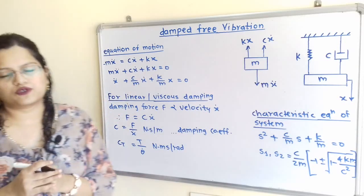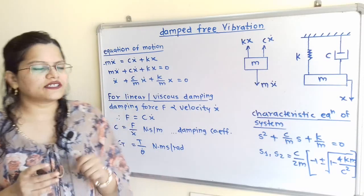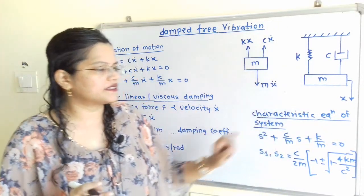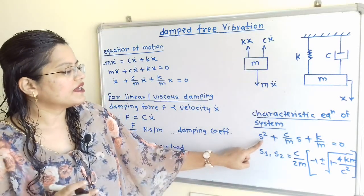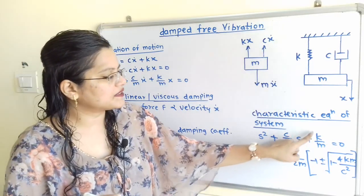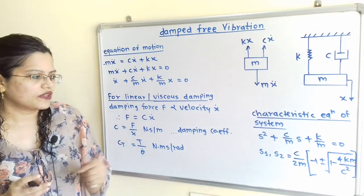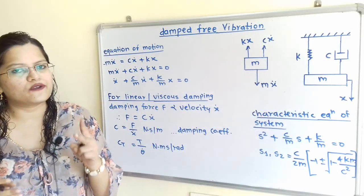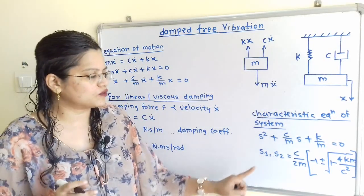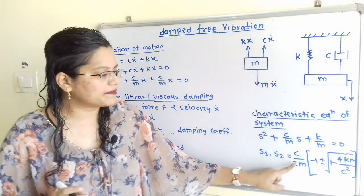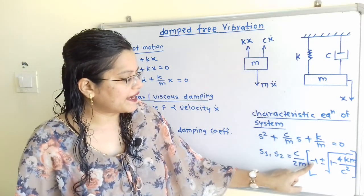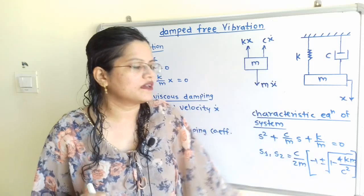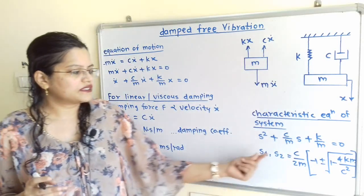This is the equation of motion. If we solve this equation by the Laplace method, we get the characteristic equation of the system: S² + (C/M)S + (K/M) = 0. Solving this gives two values S1 and S2, where S1 and S2 equal (C/2M) times [−1 ± √(1 − 4KM/C²)].